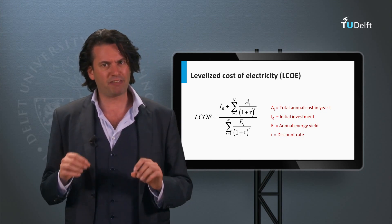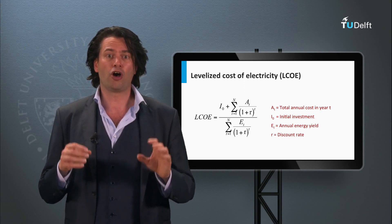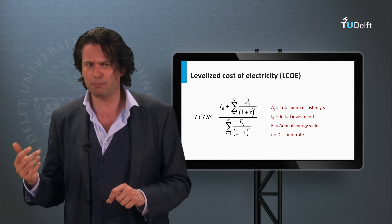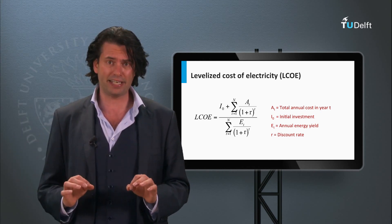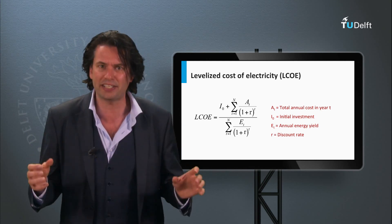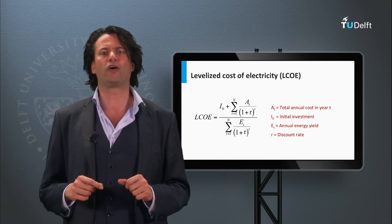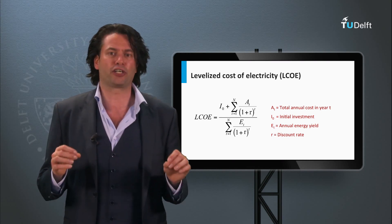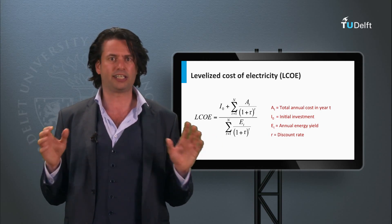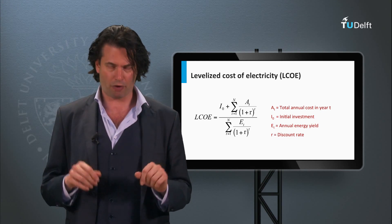For the power producer, the levelized cost of electricity is a valuable indicator of the cost competitiveness of a certain energy technology. It is also a good price point indicator — that is, the power producer will have to sell the power at a price greater than the levelized cost of electricity to make profit. Of course, the policies structured around PV energy, like feed-in tariffs, subsidies and other incentives will all play a role in determining the grid power prices.